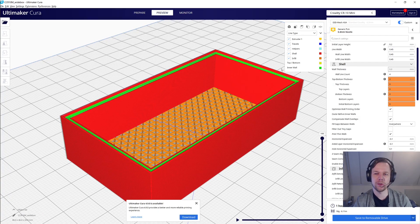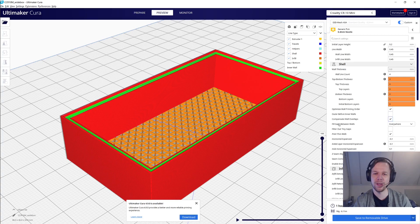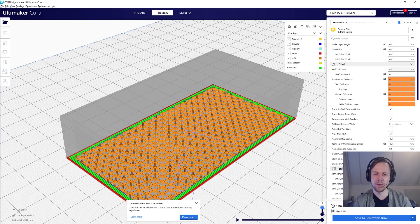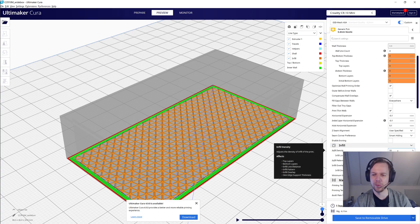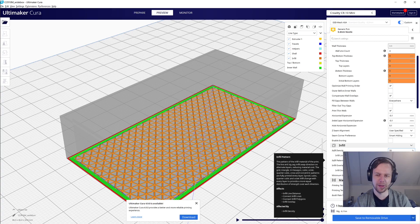is to go into your slicer and select zero top and bottom layers, and then the bottom of the box, and also of the top lid if you print that separately, becomes infill. And then you just select an infill density and a pattern that you like.